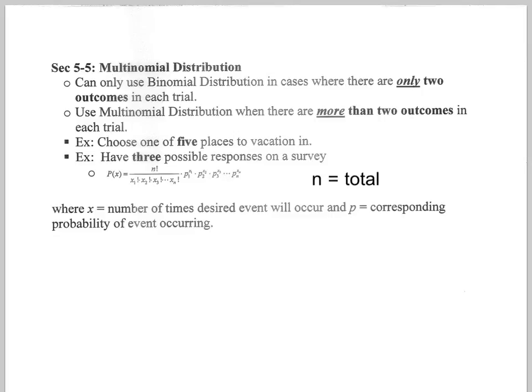Now let's turn our focus to multinomial distribution. In the last section we looked at binomial where there was only two possible outcomes. Now we're asking ourselves, what if there's more than two outcomes, how would I find the probability that something will happen then? Give a couple examples: five places to go on vacation, three responses to a survey. Right here is the formula. Don't memorize that formula, I'll give it to you.